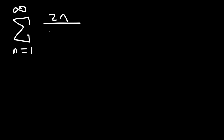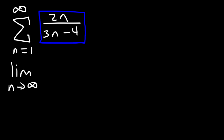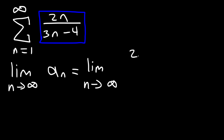So consider the series with the sequence 2n divided by 3n minus 4. Will this series diverge? Let's find out. This is equal to a sub n, so let's take the limit as n approaches infinity of a sub n, which is 2n divided by 3n minus 4.